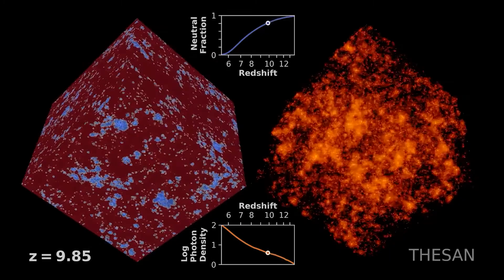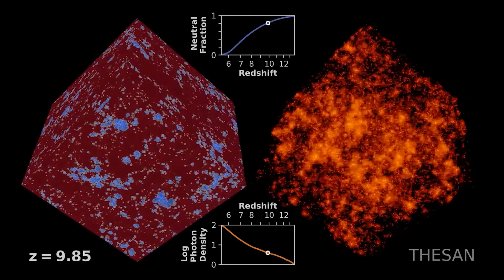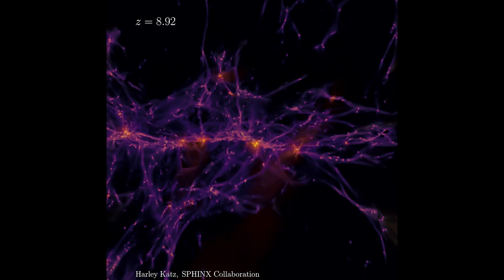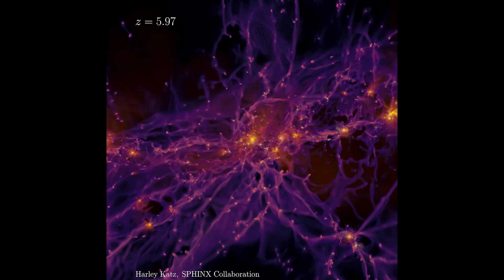It's pretty incredible that just by simply checking for what redshifts we observe a trough and for what we observe the forest in the spectrum of quasars, we can learn about when this re-ionization phase has started.